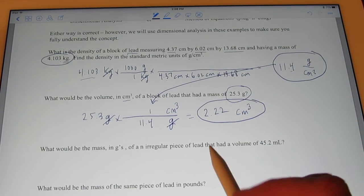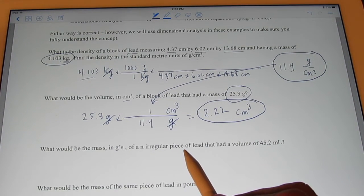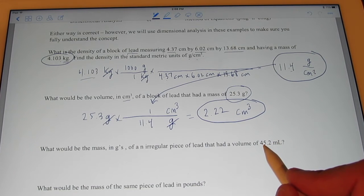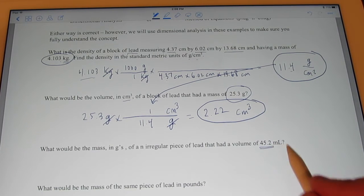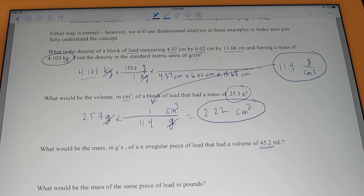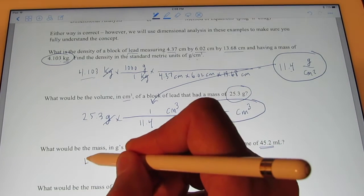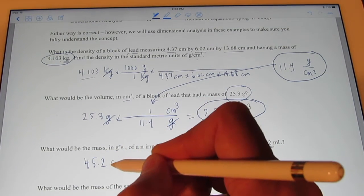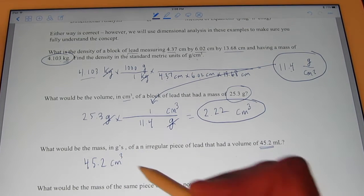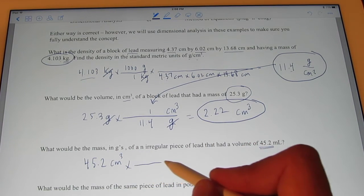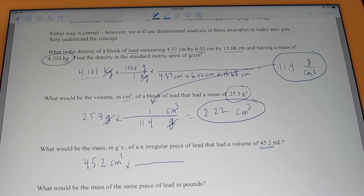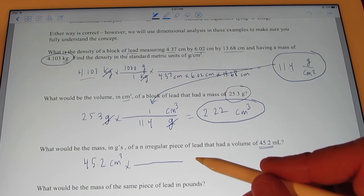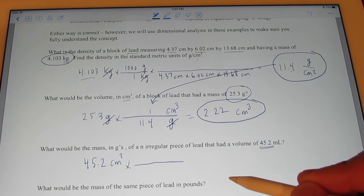Let's say I have an irregular shaped piece of lead. The volume of that irregular shape is 45.2 milliliters. Now, are you thinking a little bit ahead of me? Isn't a milliliter the same as a cubic centimeter? That's right. So, I'm going to start with 45.2 cubic centimeters again. And you finish this one off. Okay? Pause the video. Finish it off. Round your answer off to the correct number of sig figs. Then, turn the video back on and see how you did.